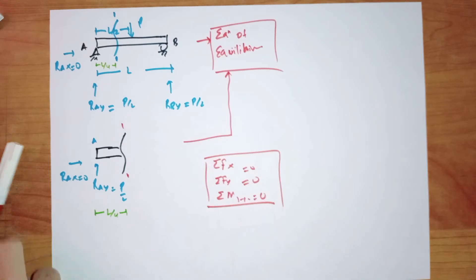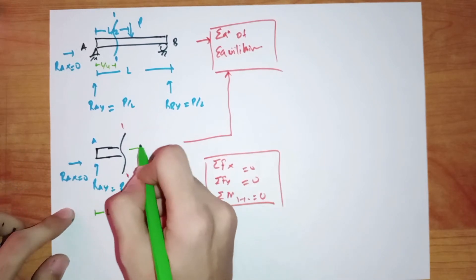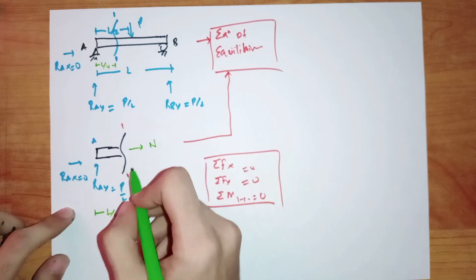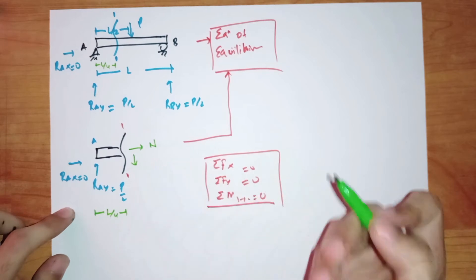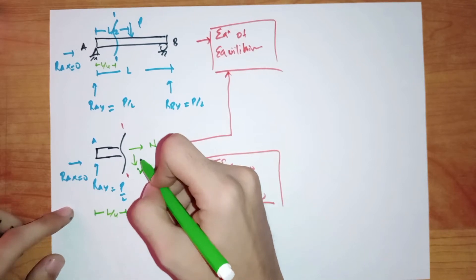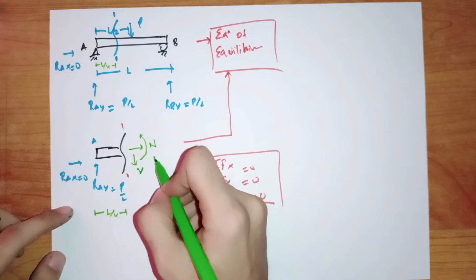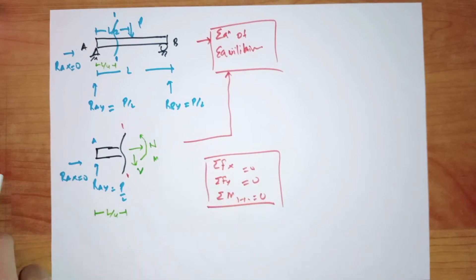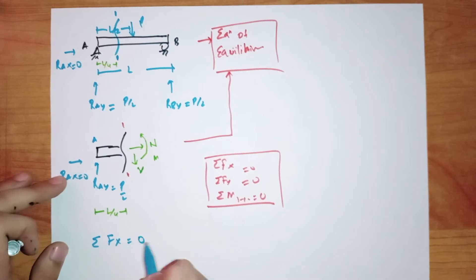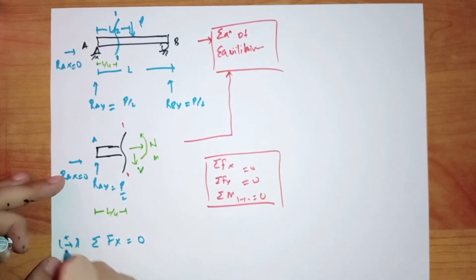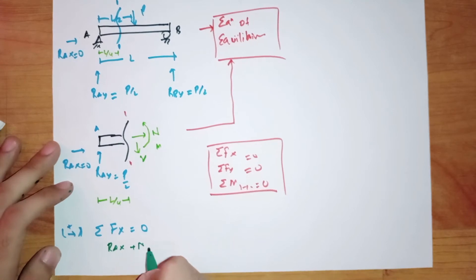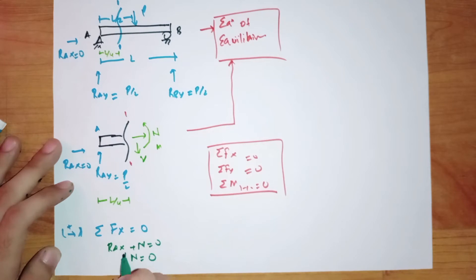Now, we know that there would be an internal force acting in the horizontal direction, which would prevent the translation of the segment in the horizontal axis, and it is denoted by N and is known as the normal force. There would also be a shear force acting in the vertical direction, denoted by V, and a moment which would prevent rotation. Applying the first equation of equilibrium and taking rightward forces as positive, we have RAX plus N equal to 0. Since RAX equals 0, N equals 0.